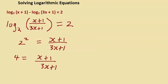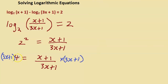We multiply both sides by (3x plus 1). Expanding: 4 times 3x is 12x, and 4 times 1 is 4. On the right hand side, (3x plus 1) cancels, leaving us with x plus 1.